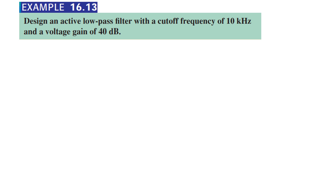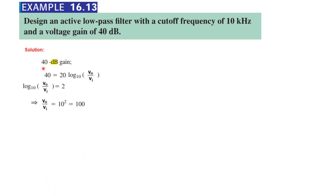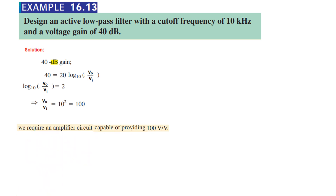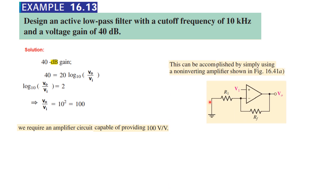Example 16.13: design an active low-pass filter with a cutoff frequency of 10 kHz and a voltage gain of 40 dB. What does 40 dB mean? 40 equals 20 log of V_out over V_in, so log(V_out/V_in) equals 40 divided by 20, which is 2. Taking the antilog, V_out over V_in equals 100. So the amplifier is required to provide a voltage gain of 100, and we must find R1 and RF.